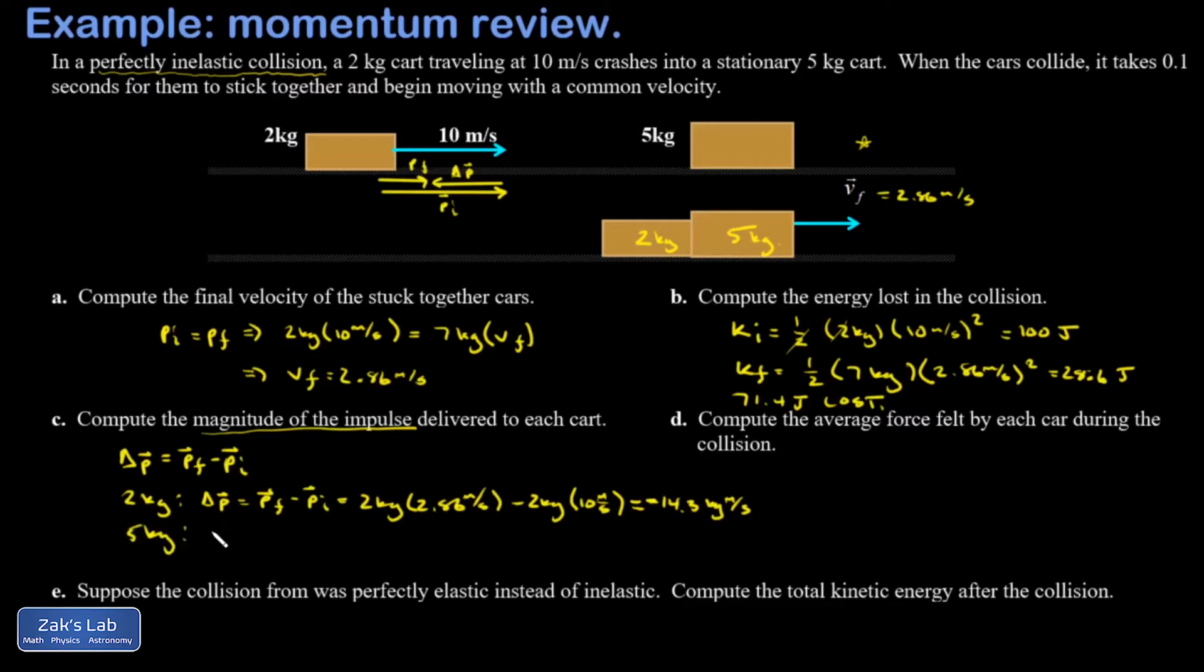Okay. What about the 5-kilogram? Delta P is P final minus P initial. P final is 5 kilograms times 2.86 meters per second minus 5 kilograms times its initial velocity. Well, I knew that was zero anyway. So I get 5 times 2.86. And that gives me a positive 14.3 kilogram meters per second. And this is no surprise. We know that during a collision, the two objects have to have opposite impulses. So they have momentum changes that are opposite in sign. And that means the total change in momentum of the system is zero. In other words, momentum is a conserved quantity, which we were operating from from the very beginning.